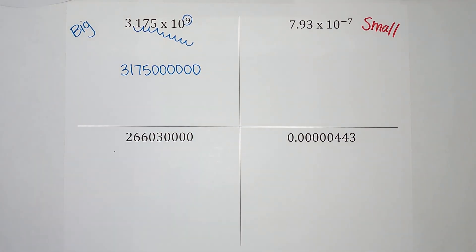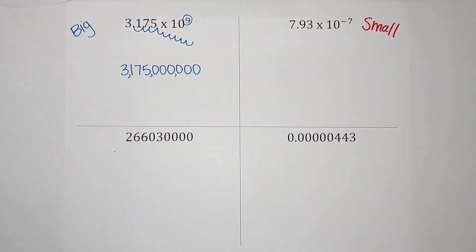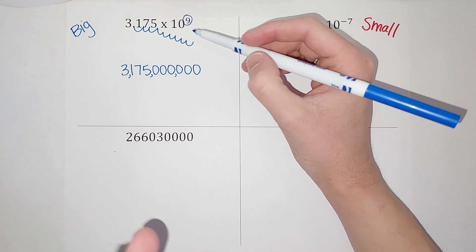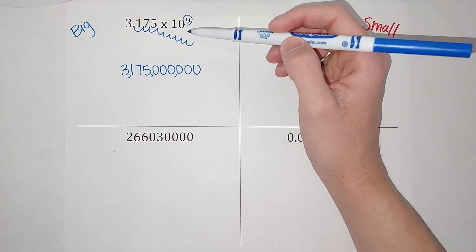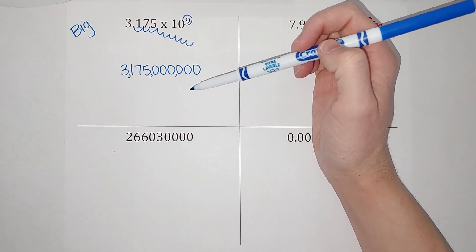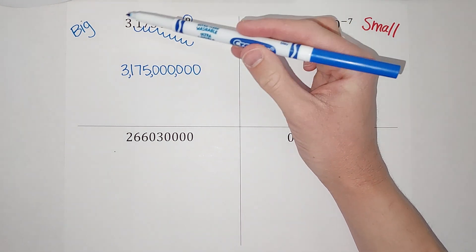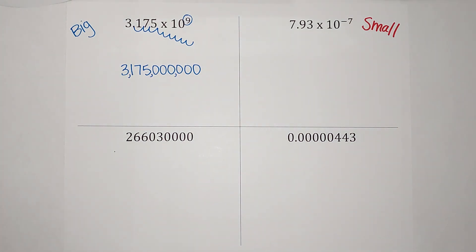I'm going to put zeros in all the places where there isn't a number. So I'll have 3, 1, 7, 5, and then the extra spaces — one, two, three, four, five, six. That is how big that number is. It can help to put commas every three numbers. Ten to the ninth power — if I were to multiply that out, ten times itself nine times, that would give me a billion. So we really just multiplied this by a billion, and got this big number. This is why we have scientific notation: it's easier to read and write.